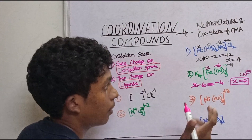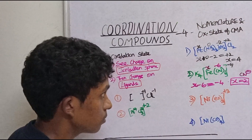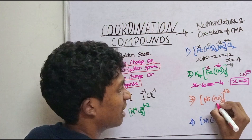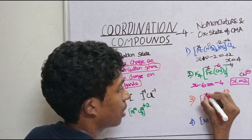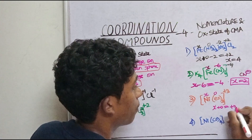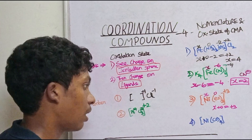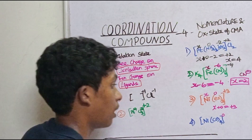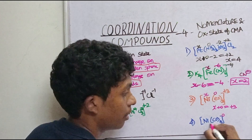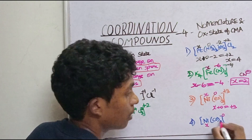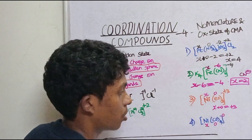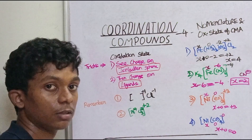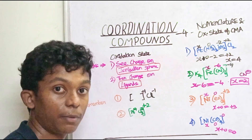Let's follow the technique. Here, you can get the charge directly. You can get plus 3 directly, and the charge is zero, so x plus 0 equals plus 3, meaning x equals plus 3. Now for the next one - this is not a charged compound. The carbonate component with nickel gives x equal to 0. So the oxidation state x equals zero. Now we can proceed to nomenclature.